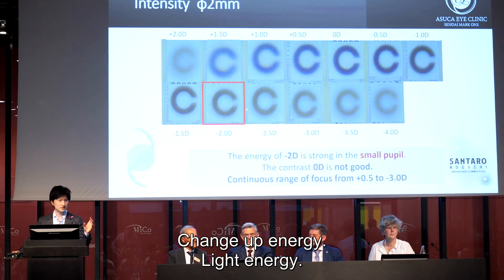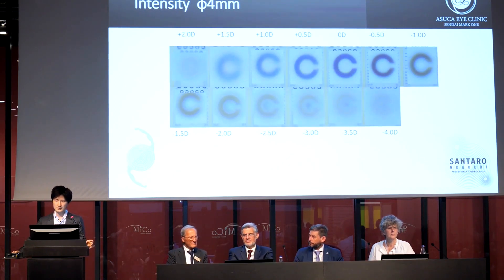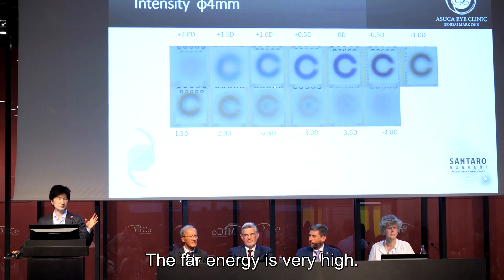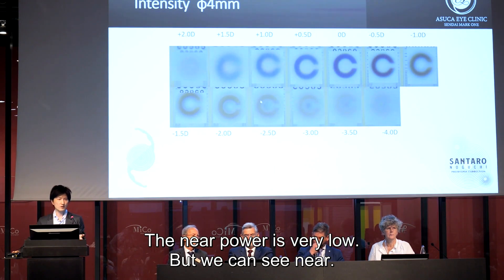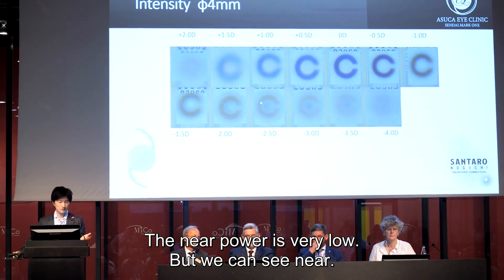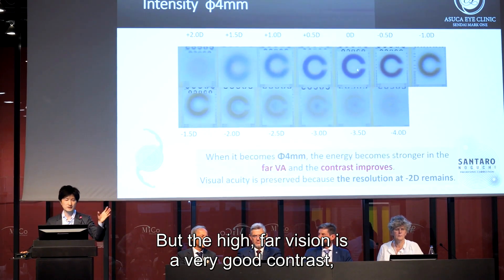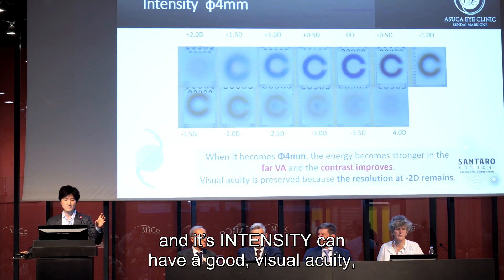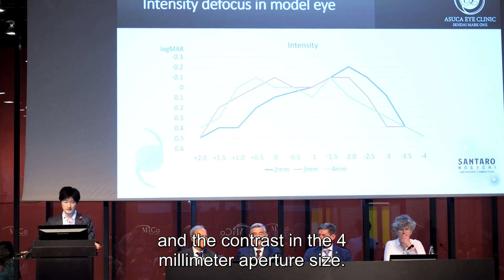At the 4mm aperture size for Intensity, the result is very different. The far power energy is very high, and the near power is relatively low, but we can still see near. The far power vision is very good, and both far and near have good contrast. The Intensity can have good energy and contrast in far power with 4mm aperture size.